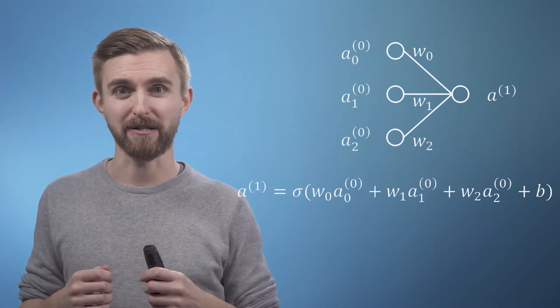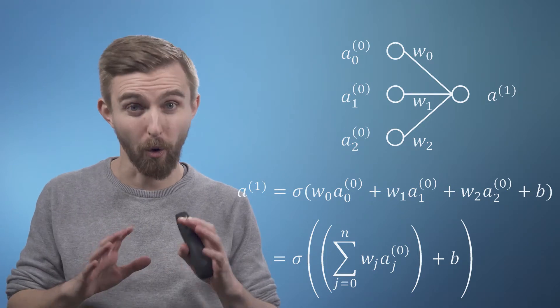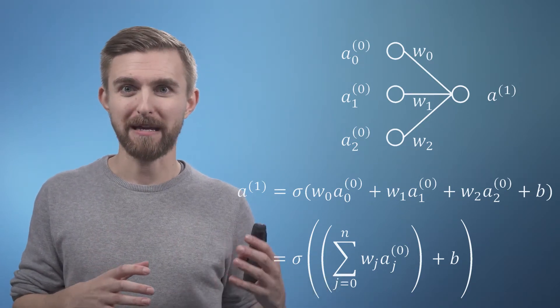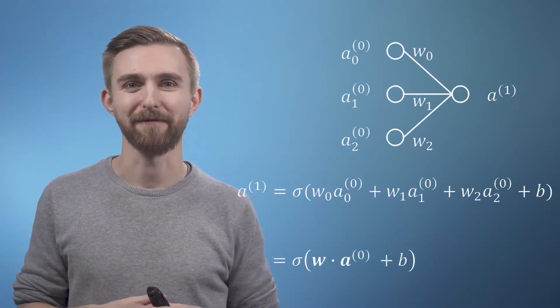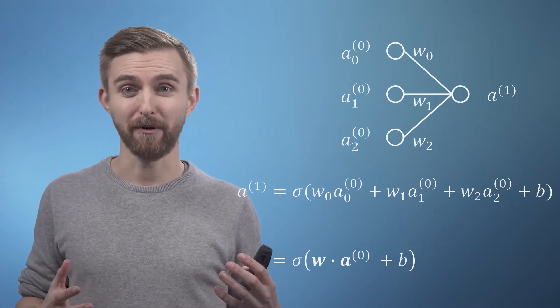So let's now generalize our expression to take n inputs, for which we can just use the summation notation, or even better, notice that each input has a weight. So we can make a vector of weights and a vector of inputs and then just take their dot product to achieve the same effect. We can now have as many inputs as we want in our input vector.